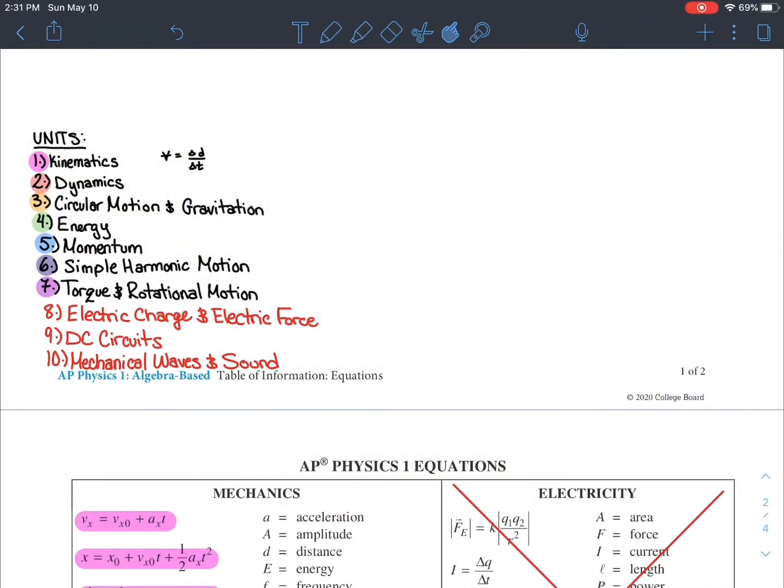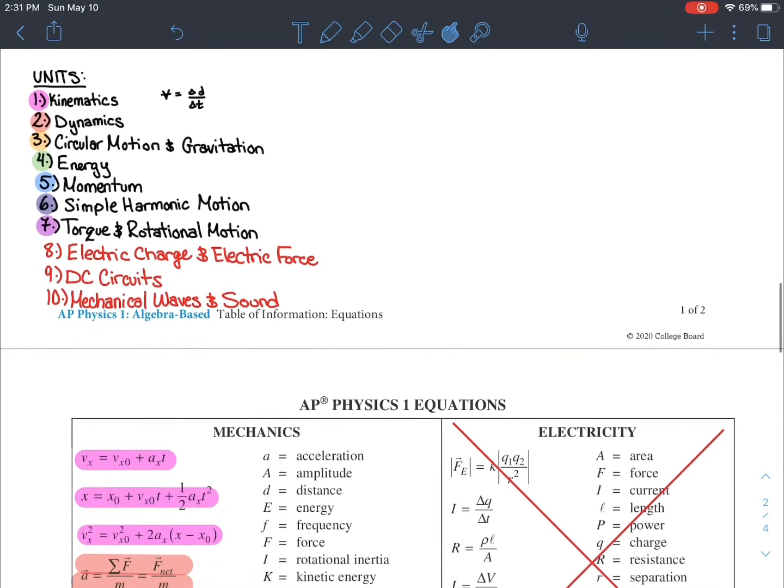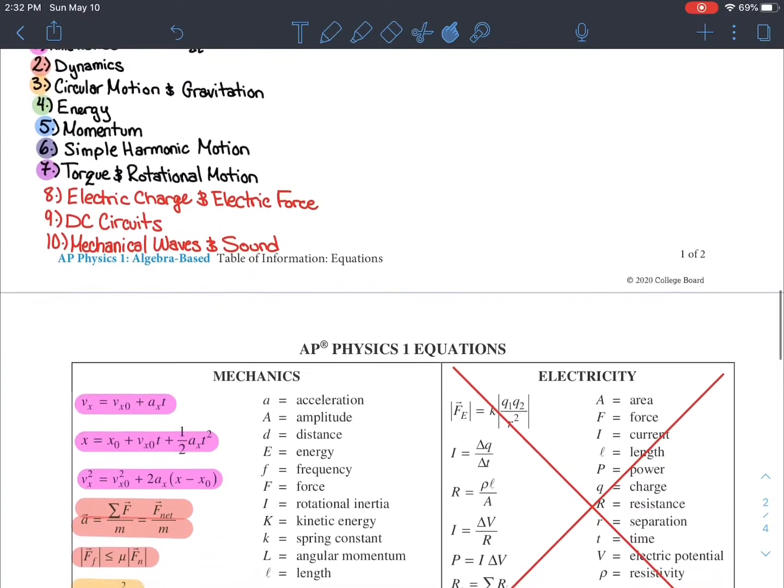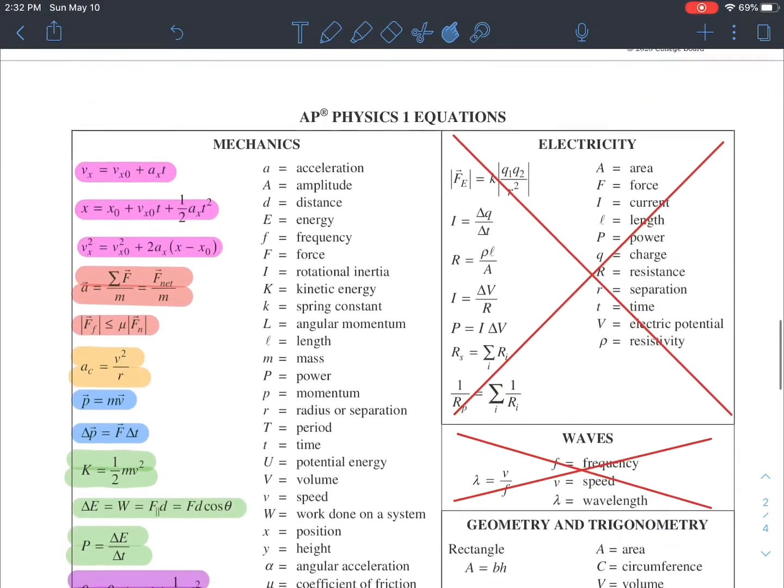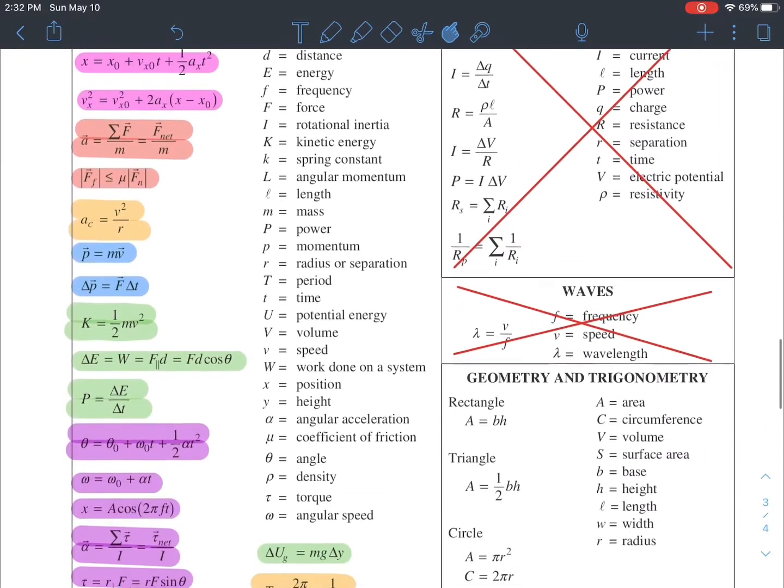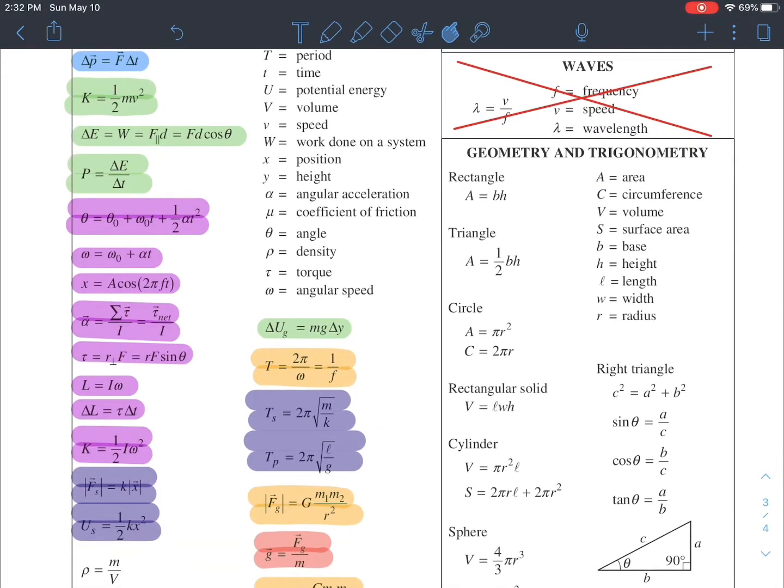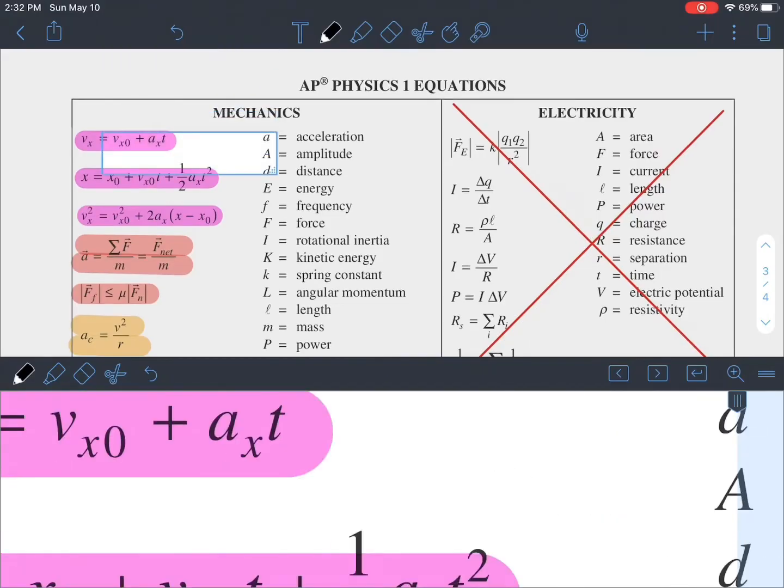Here are all of the units in physics this year: Kinematics, Dynamics, Circular Motion and Gravitation, Energy, Momentum, Simple Harmonic Motion, and Torque and Rotational Motion. The rest are gone. I've color coordinated them and matched them to the formulas on the formula sheet. So for example, all of the pink highlighted equations are all kinematic equations, and so on and so forth. Let's take a look at some of these in particular.